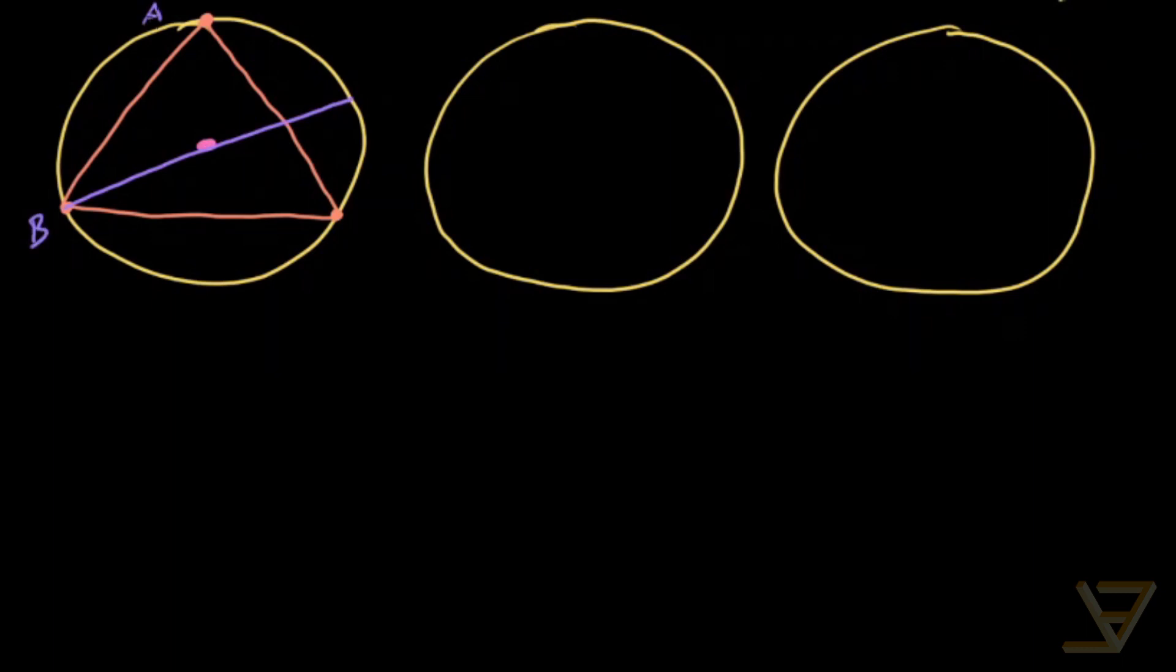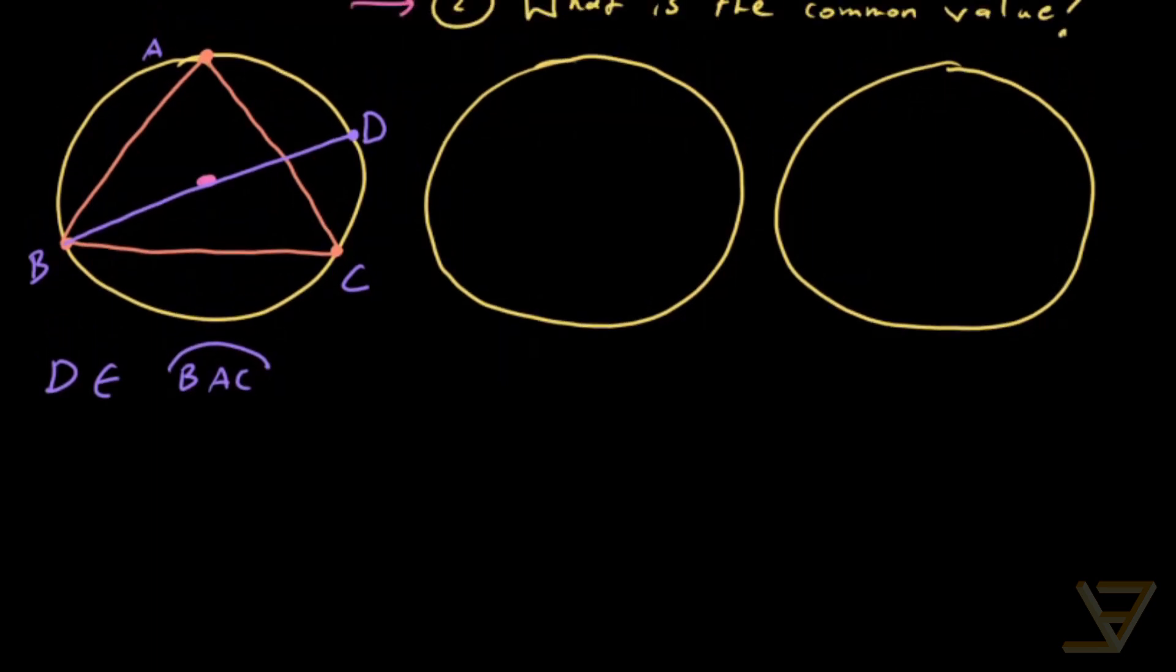So in the first case, we've got a triangle here and the center of the circle is here. When we draw the diameter through B, A is up here, B is down here, and C is down here. What we have is that the other endpoint, which we're going to call D, is on arc BAC.